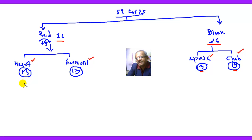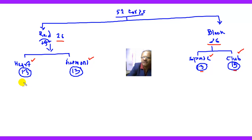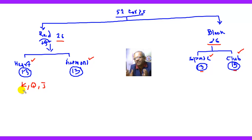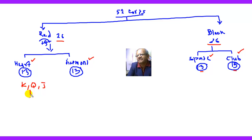There are three types of cards called face cards. These are called face cards because the faces of those cards are shown on them. For example, one is king, another is queen, and the third one is jack. On the cards, the face of a king, face of a queen, and face of a jack are shown, and therefore these cards are called face cards.